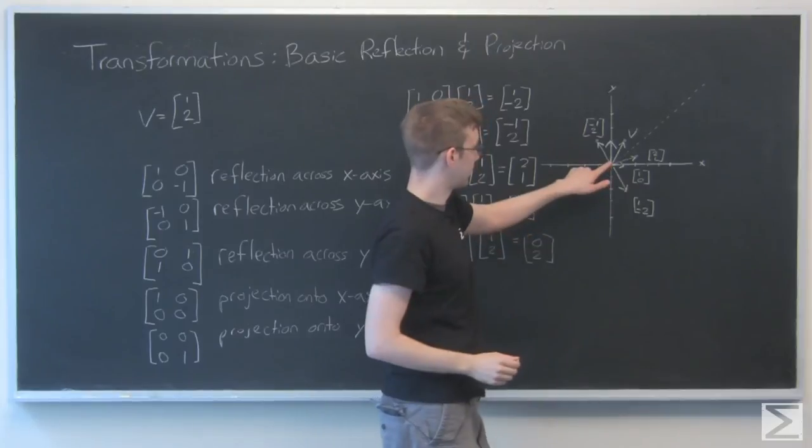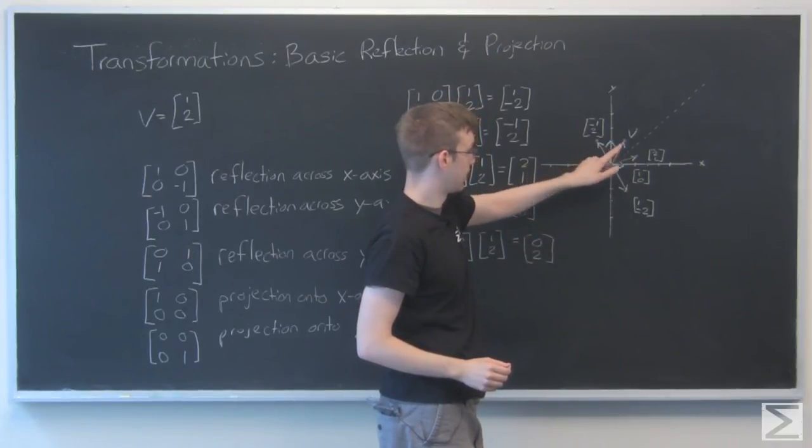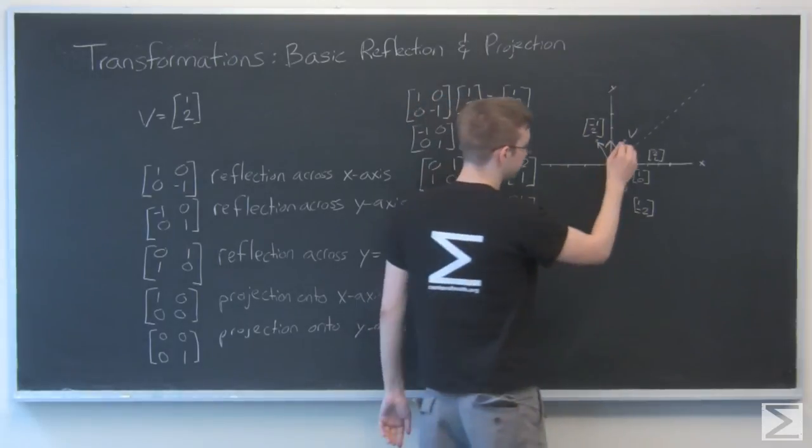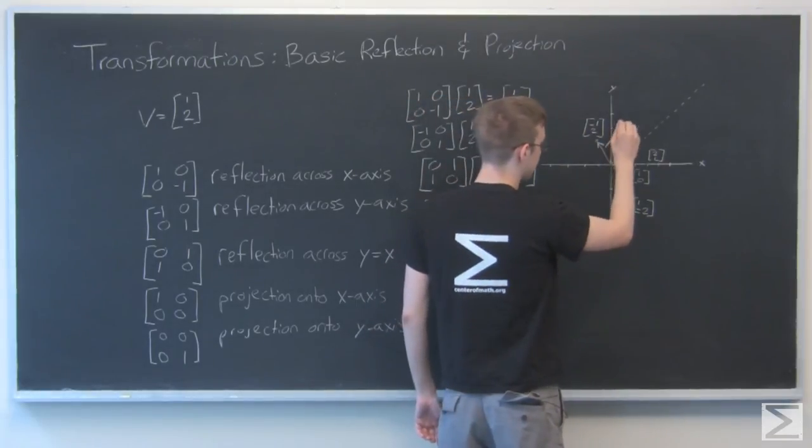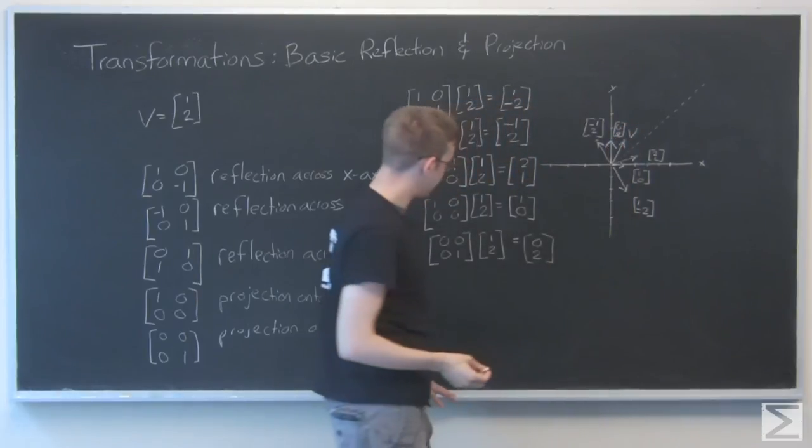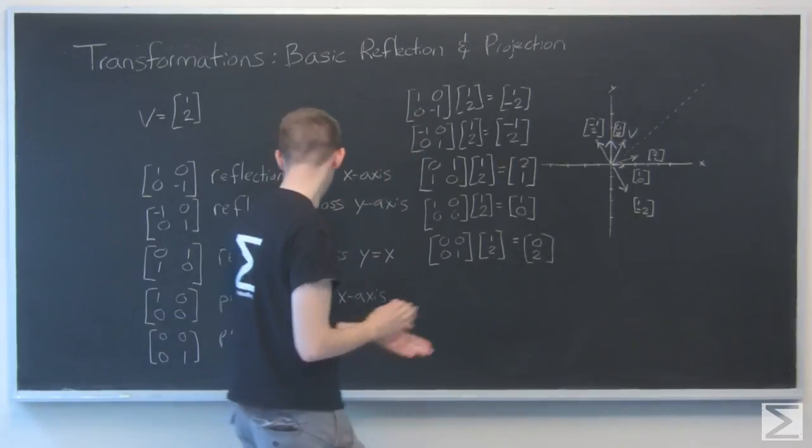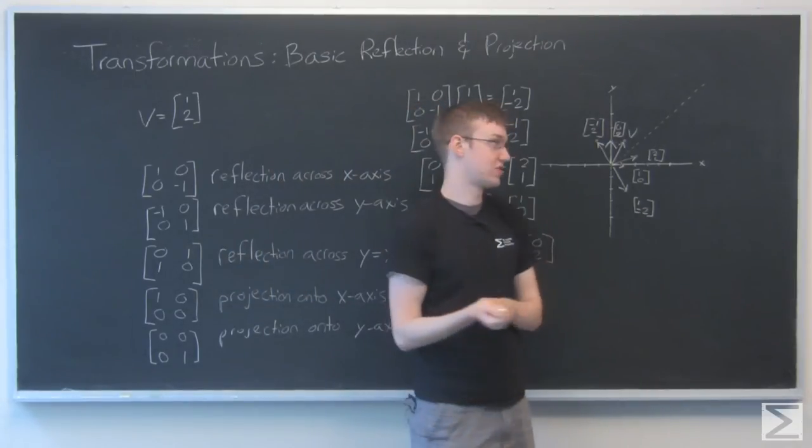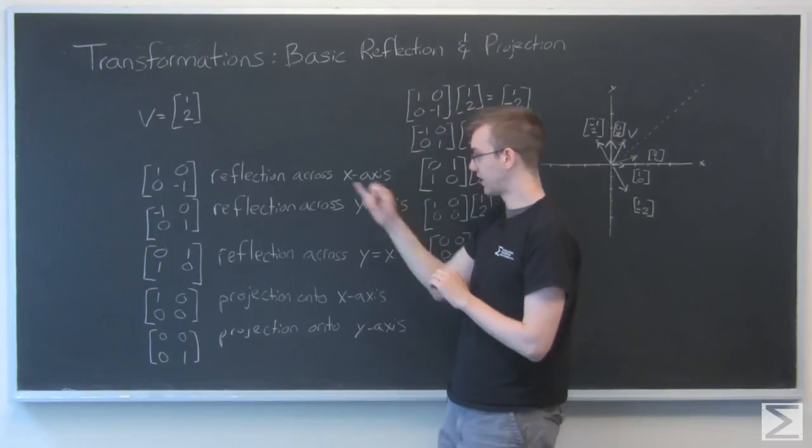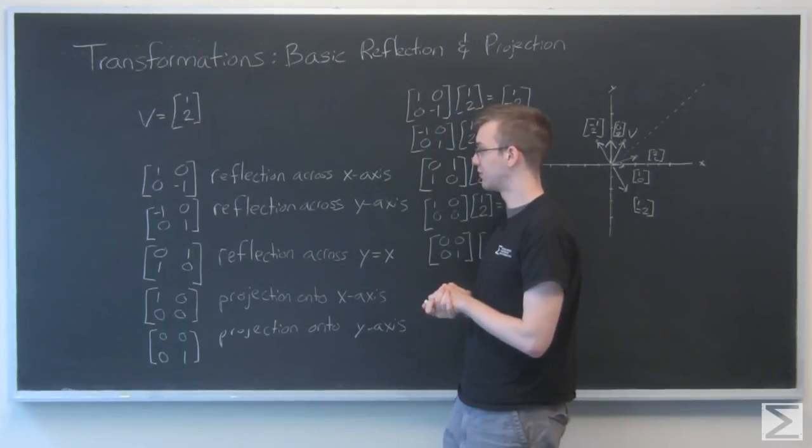So again, it's taking our original vector, which is right here, and doing the horizontal shadow onto the y-axis like that. Those are the two most basic projections that we have just onto the axes. And again, we have those three examples of reflections.